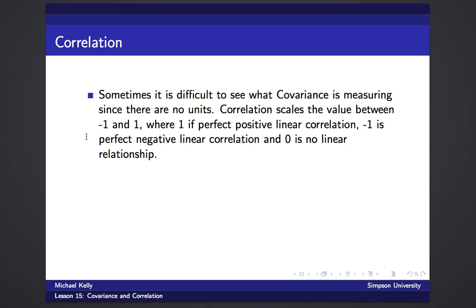Covariance has no units, which sometimes makes it difficult to interpret — a covariance of 10 could be large or small depending on context. So sometimes we scale the covariance to be between negative one and one, and we call this the correlation. A value of +1 is a perfect positive linear correlation, -1 is a perfect negative linear correlation, and zero means there is no linear relationship.